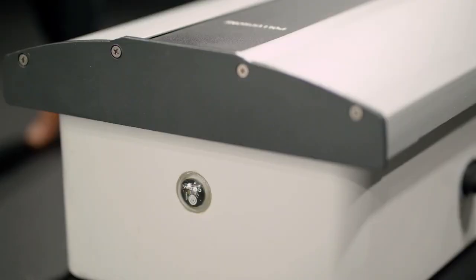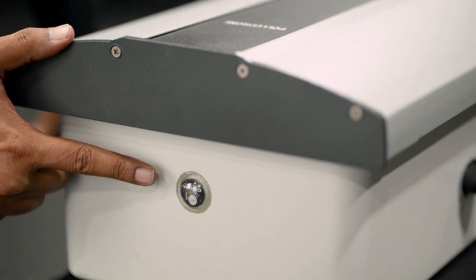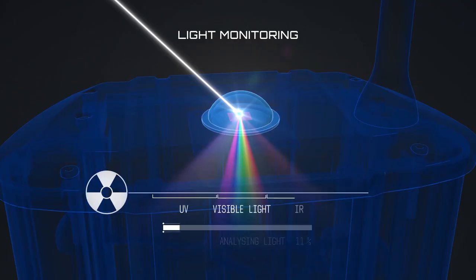Did you know exposure to excess sun radiation causes rashes, sunburns and even skin cancer? UV rays present in sunlight are extremely harmful to the skin. The ambient light is captured from the pyranometer dome on the top of the equipment, which has various photosensors to measure UV radiation, light intensity and solar radiation from the ambient light.